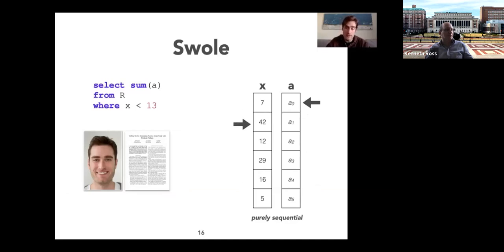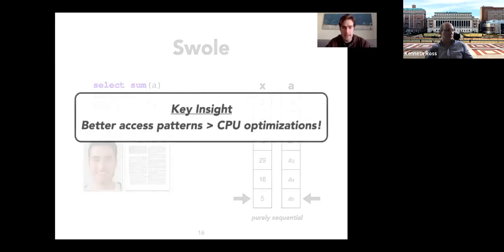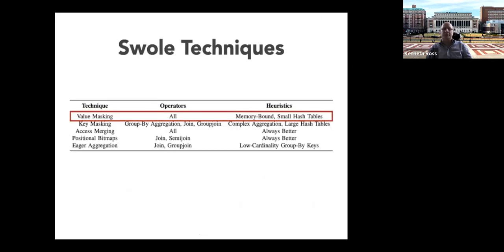SWOLE achieves better access patterns through predicate pull-ups. For X, we do the same sequential scan for predicate evaluation. For A, we now do a sequential scan instead of conditional reads — always reading the next value without skipping. The key insight is that better access patterns often outweigh CPU optimizations such as SIMD and prefetching. In the paper we present five optimizations; we focus on value masking: we evaluate the predicate sequentially, store results in CMP, then compute the sum over all A values, multiplying each by its CMP value to mask out non-passing tuples.